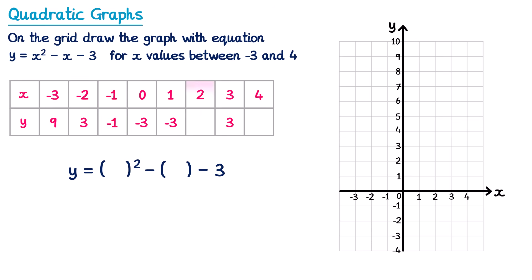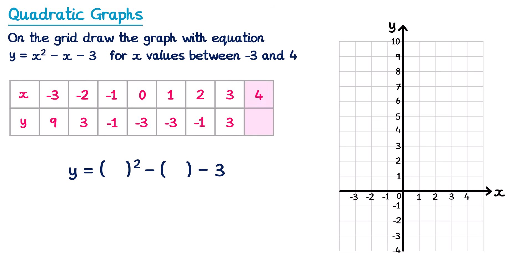Now let's move along to when x is 2. We put 2 inside these brackets. We've got y equals 2 squared which is 4, subtract 2, and then subtract 3. Four take away 2 is 2, and 2 take away 3 is negative 1. So we put negative 1 into the table. Then the final one when x is equal to 4 — we put 4 inside these brackets. We have y equals 4 squared which is 16, subtract 4, and subtract 3. Sixteen take away 4 is 12, and take away 3 is 9. So y is 9. That's the table complete.